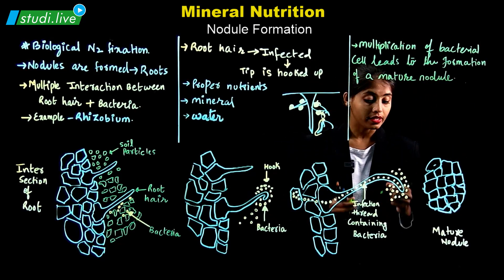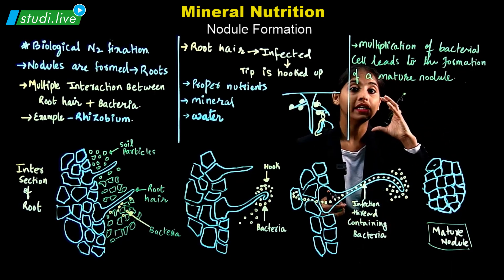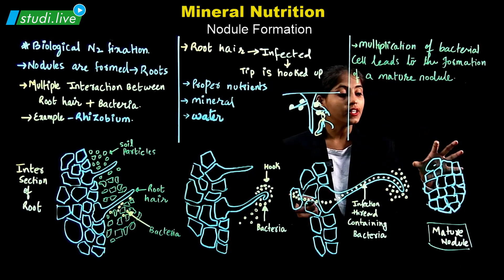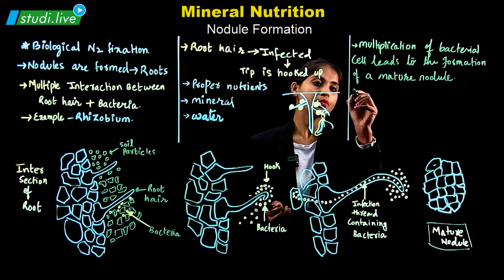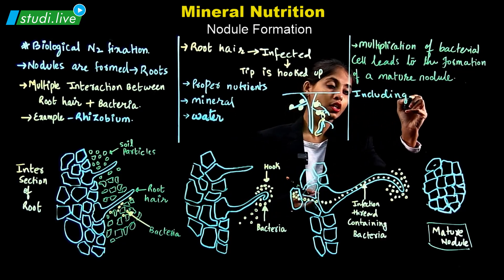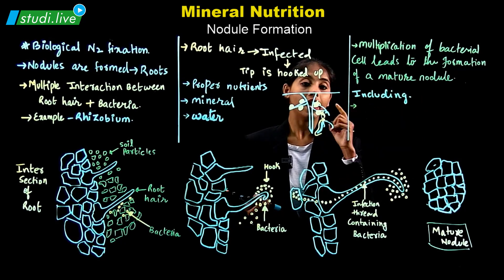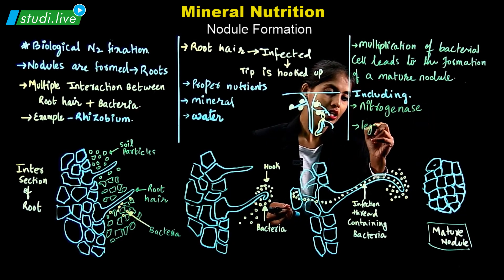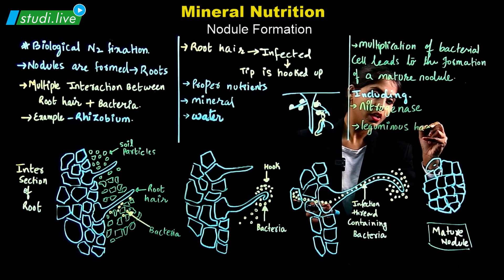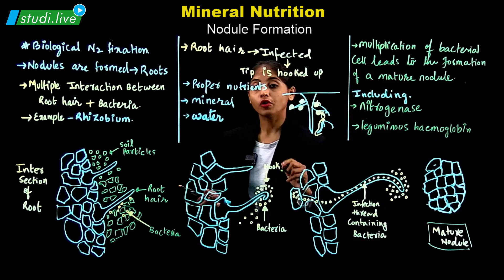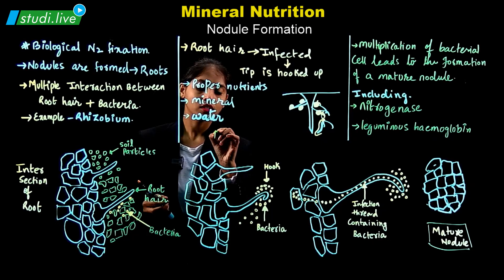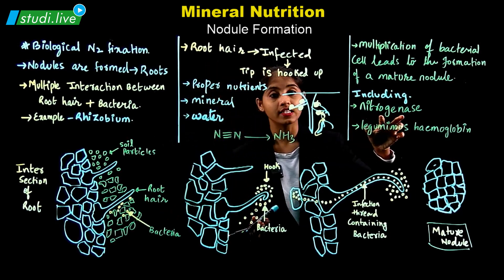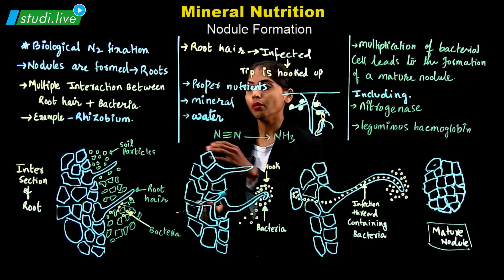The mature nodule, as you can see — this complete bulk — is formed in this way. This mature nodule contains all the important composition, including the enzyme nitrogenase and leguminous hemoglobin. These are the main important components for the conversion of nitrogen into ammonia. The nitrogenase enzyme is secreted by the bacteria.